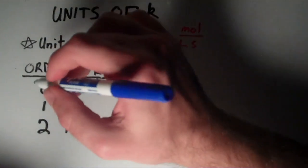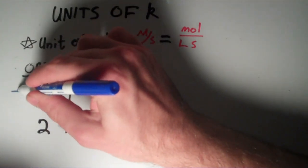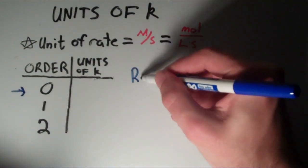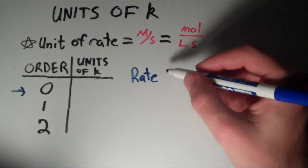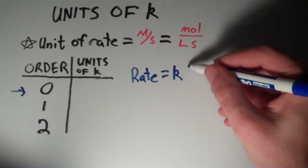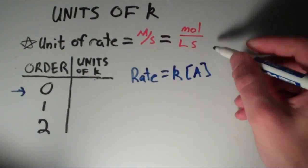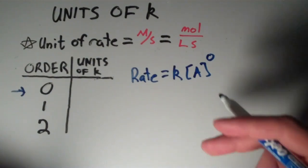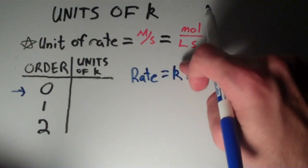First, suppose we have a zero-order reaction. If you recall, the rate law for a zero-order reaction is rate equals K times the concentration of A to the zero power, or more simply, rate equals K.